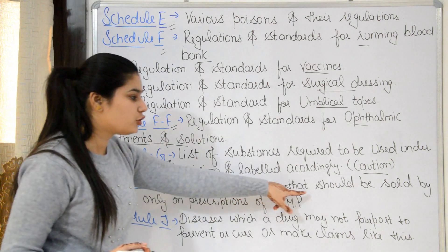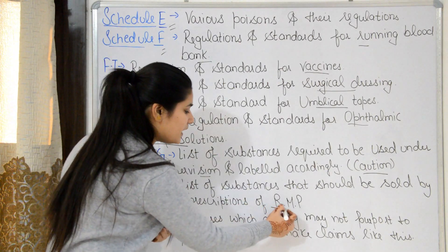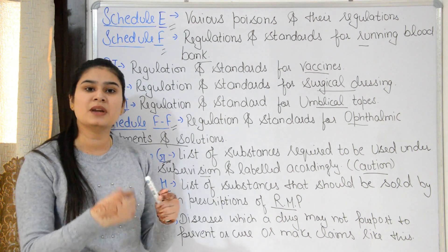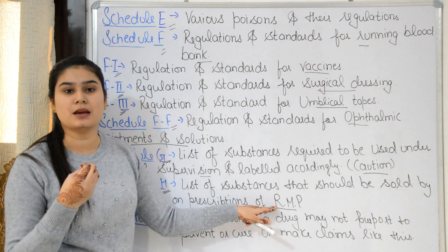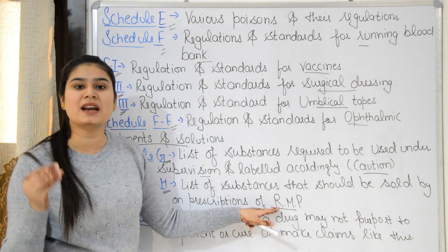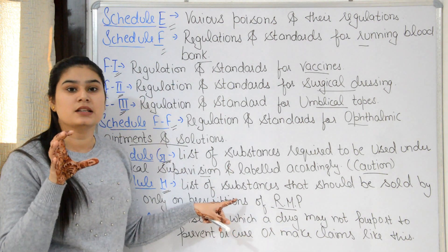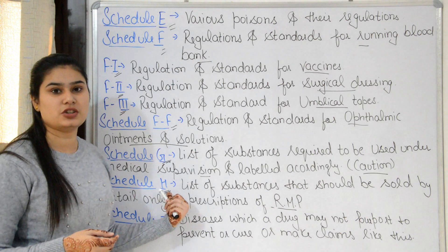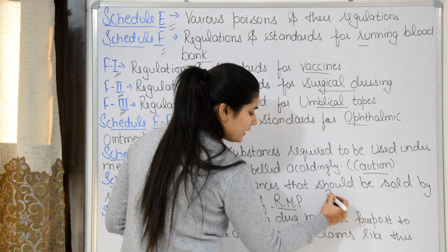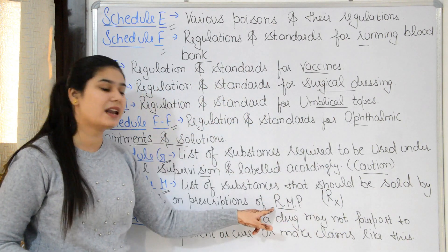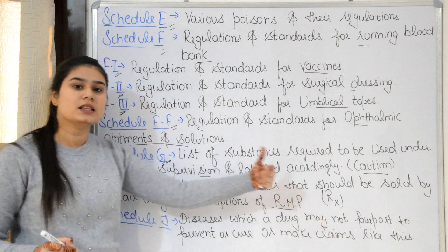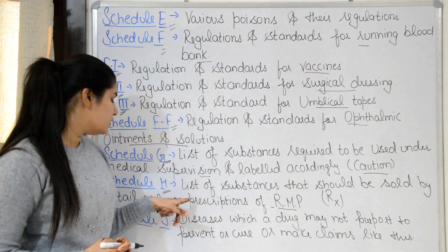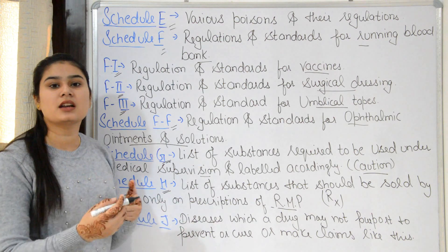Schedule H lists substances that should be sold by retail only on the prescription of a Registered Medical Practitioner (RMP). We must have an RMP prescription to get these drugs from a pharmacy. Examples of Schedule H drugs include barbiturates, atenolol, and acyclovir — these drugs can only be obtained with an RMP prescription.